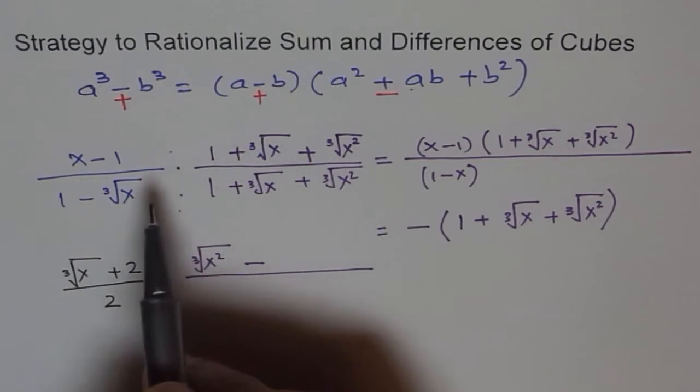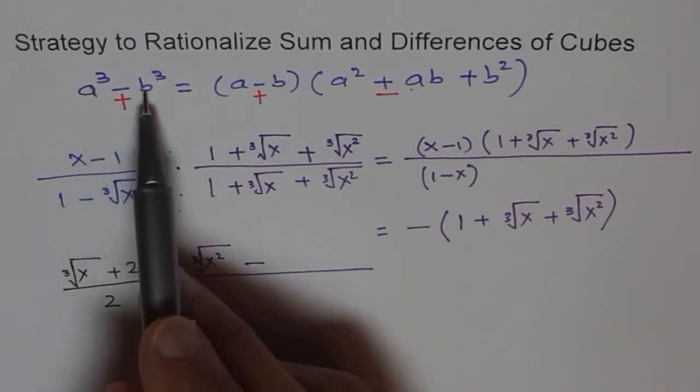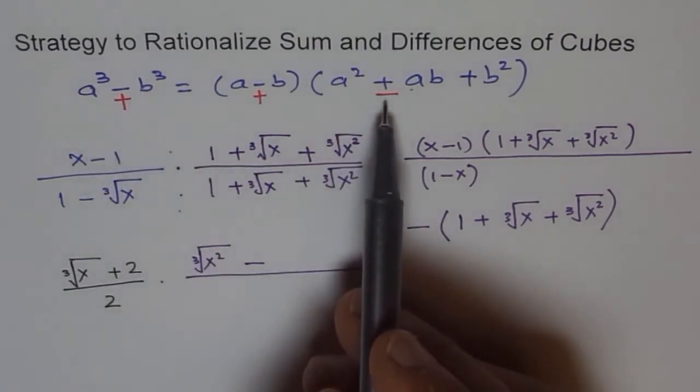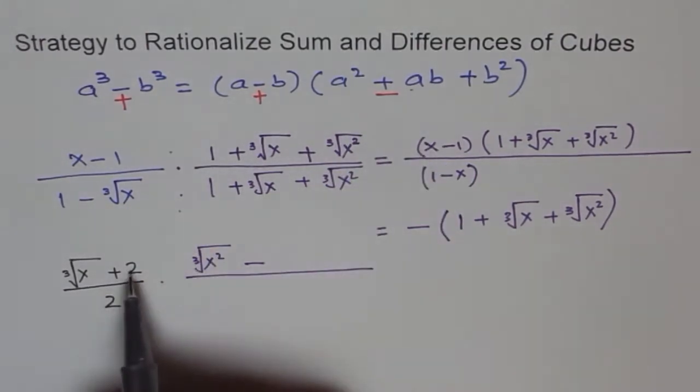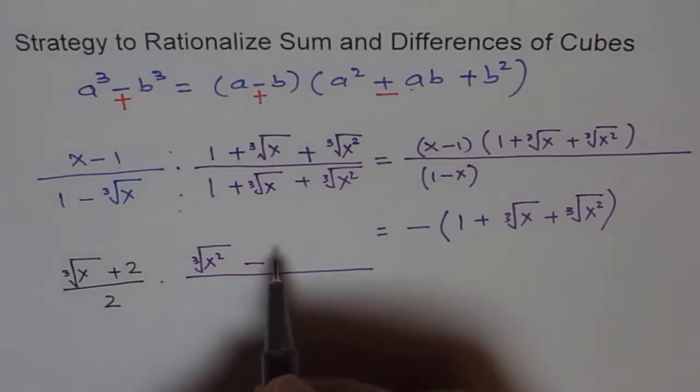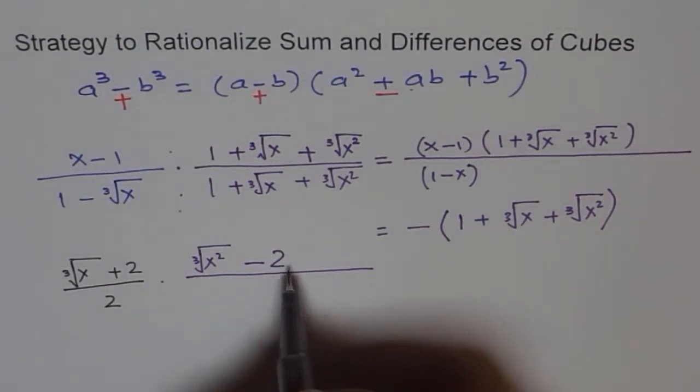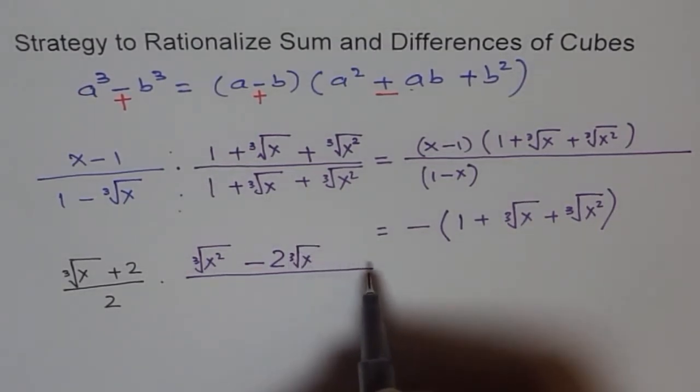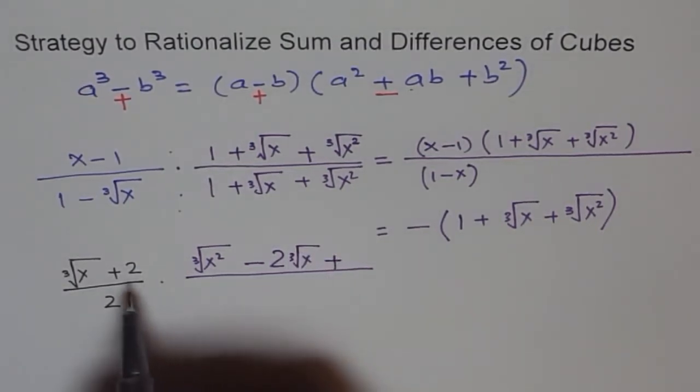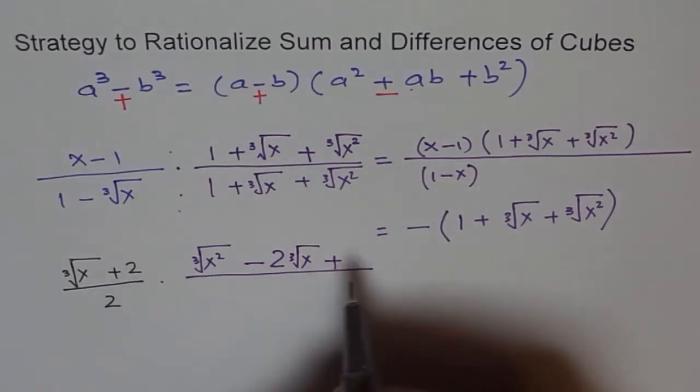Plus will become minus because we are doing a³ + b³. So we will use minus this time. When you use minus, product of the two terms. So the two terms are 2 and this number. So you get 2 and this is cube root of x. And then you get plus square of this and square of 2 is 4.